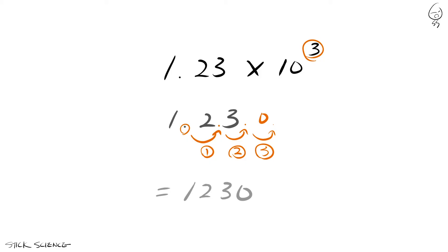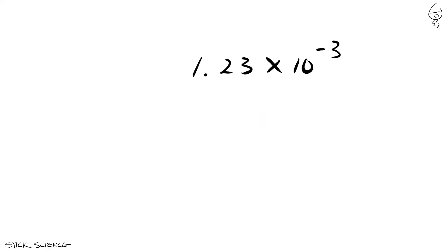Negative exponents use the same principle, only in reverse. Let's say we want to convert 1.23 times 10 to the negative third power. The same rule applies, but this time we count left: 1, 2, and 3.